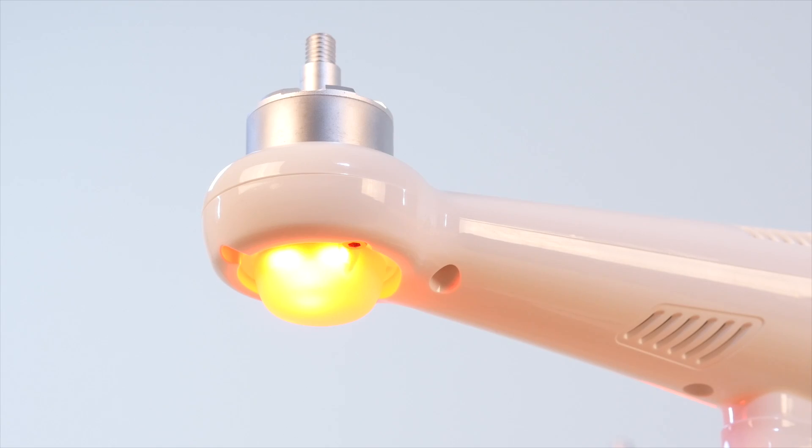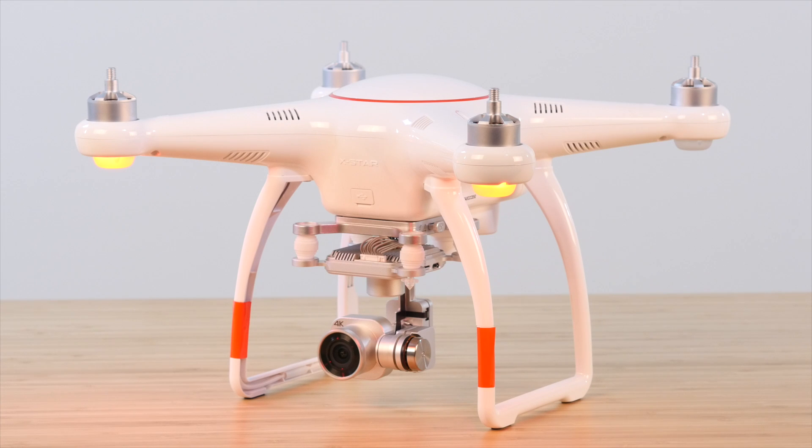Underneath each of the motors, we have LED indicator lights. These LEDs are one way that the X-Star drones communicate with you. The color and flashing pattern of these lights give you critical information, especially when you're disconnected from the Starlink app.